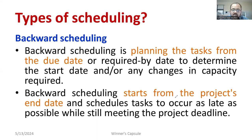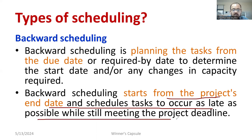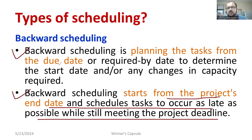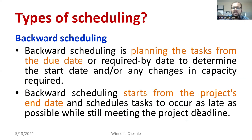Backward scheduling starts from the project end date and schedules tasks to occur as late as possible while still meeting the project deadline. You can use whichever definition is convenient — from the last day to the beginning, you schedule. That last date is when the project needs to be delivered to the clients.